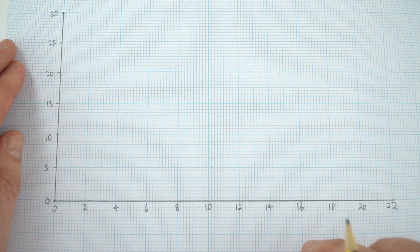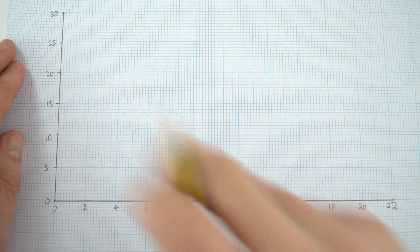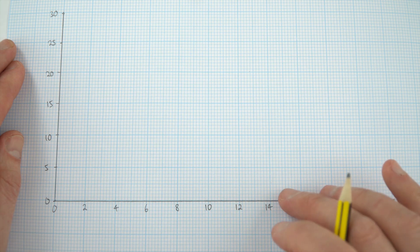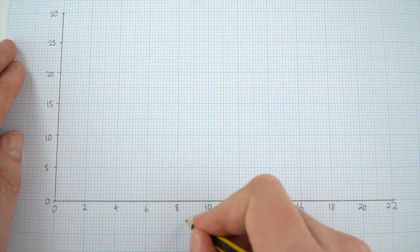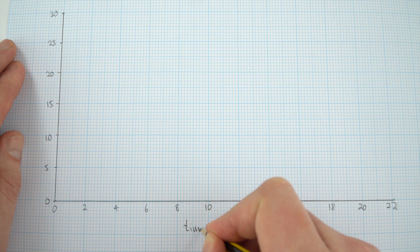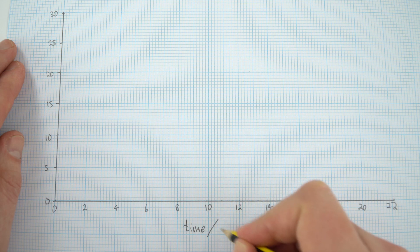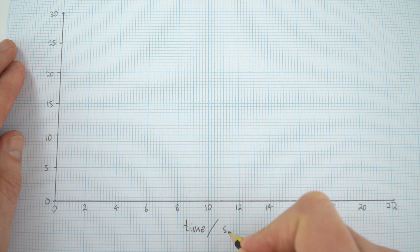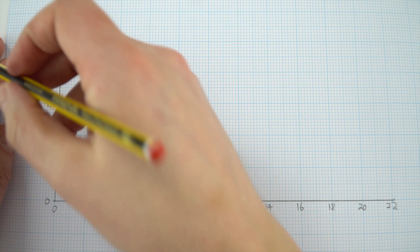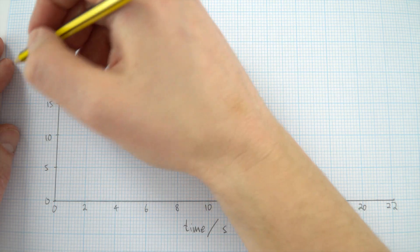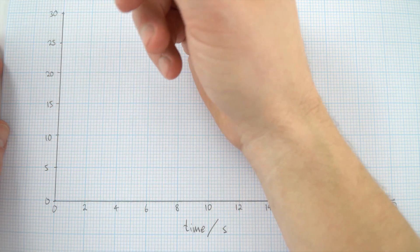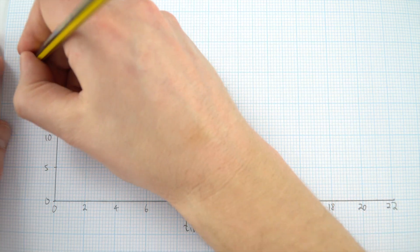The other thing to do with both the x and y-axis is to make sure that you label it. So perhaps we have time — this is the quantity — and then we put a line and then we have our units afterwards, so maybe time in seconds. Maybe this is the distance that something has gone in centimetres.